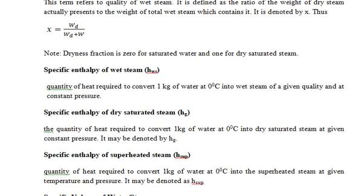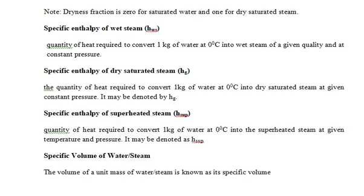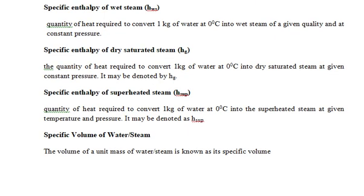The specific enthalpy of wet steam is the quantity of heat required to convert one kilogram of water at zero degrees Celsius into wet steam of a given quality at constant pressure. For dry saturated steam, the quantity of heat required converts water into dry saturated steam at constant pressure. For superheated steam, the specific enthalpy is calculated at a given temperature and pressure and is denoted by h_sup.